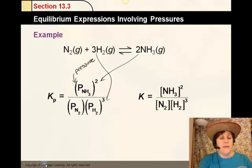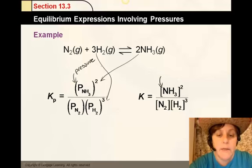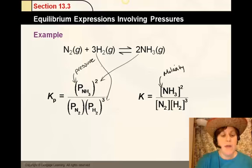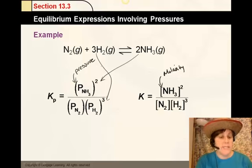Here is how you would write the same exact expression if you were talking about concentrations. You could find the molarity of these species. In this case, you have NH3 squared over N2 times H2 to the third power. The square brackets imply molarity, and the rounded brackets imply pressure. Same exact idea.